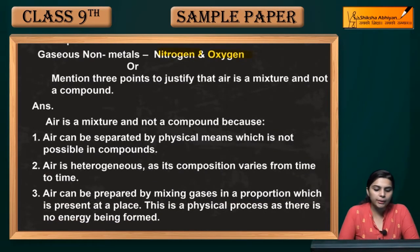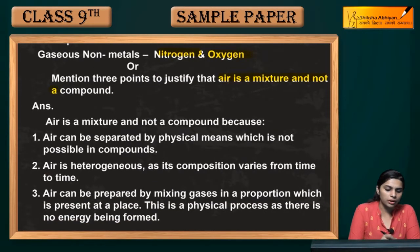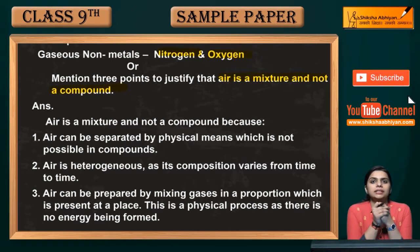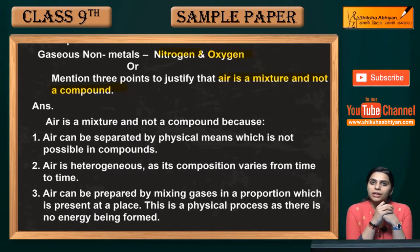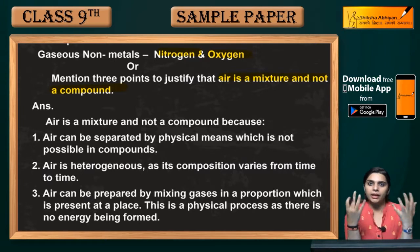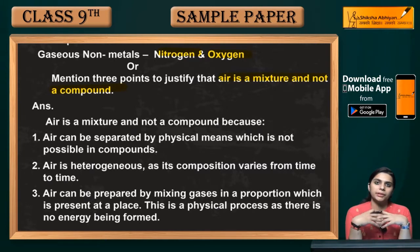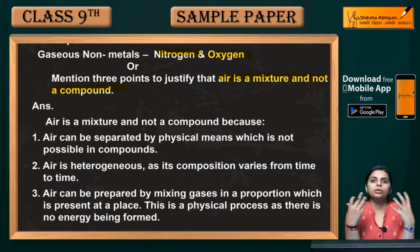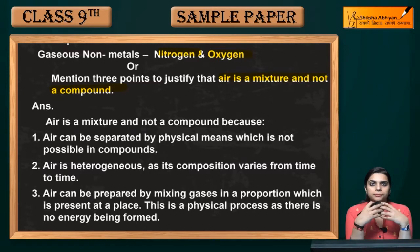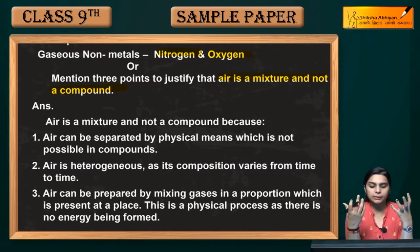Next question: mention three points to justify that air is a mixture, not a compound. You have to give three points to justify that air is a mixture and not a compound, as we have seen in our surroundings. Air is a mixture of gases and dust particles.